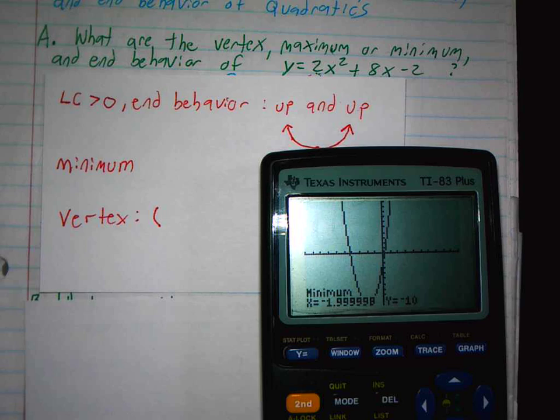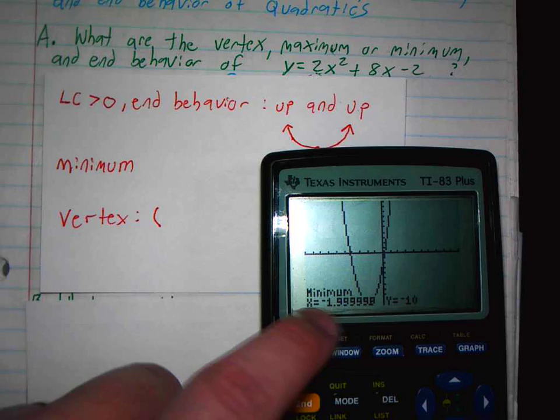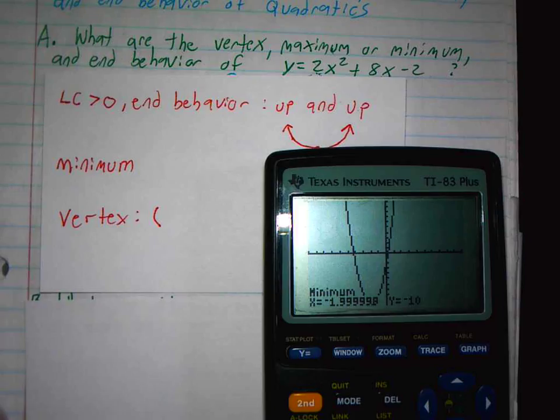So my minimum is at negative 2 comma negative 10, and my minimum would be negative 10 because that's my smallest point. So my vertex is negative 2, negative 10.